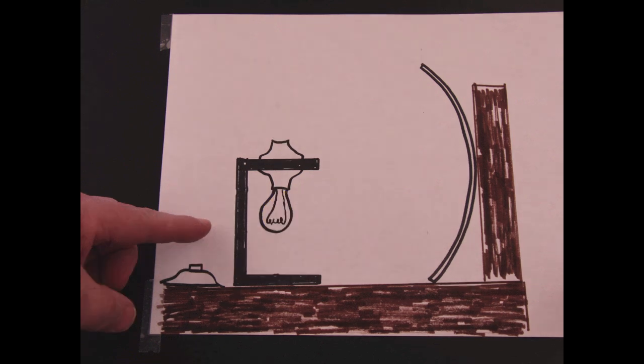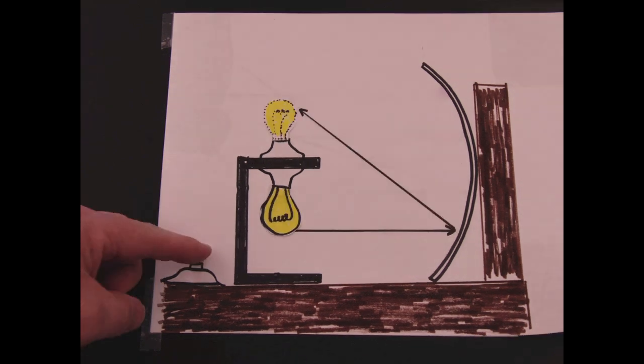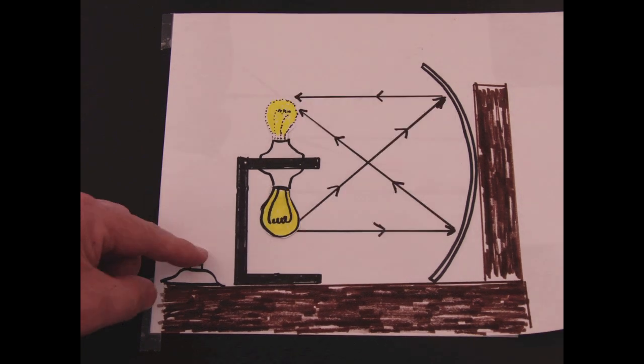Now, if I unscrew the top bulb, and I push down on the button again, that lower bulb, which is upside down, will light up, and its image will be reflected and inverted, or in this case, turned right side up, so that it appears where that upper bulb is supposed to be sitting.